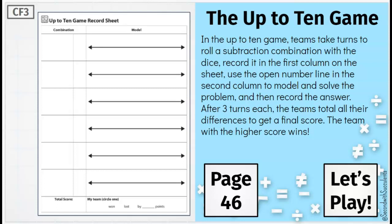Now you may have noticed a few different things. You may have noticed that at the top, we see the words combination and model at the top of our columns. You may also have noticed that we have 1, 2, 3, 4, 5, 6 open number lines on our page. You may have also noticed that the bottom of our page says total score and my team won, lost, by how many points. These are important things we'll need as we play the Up to 10 game.